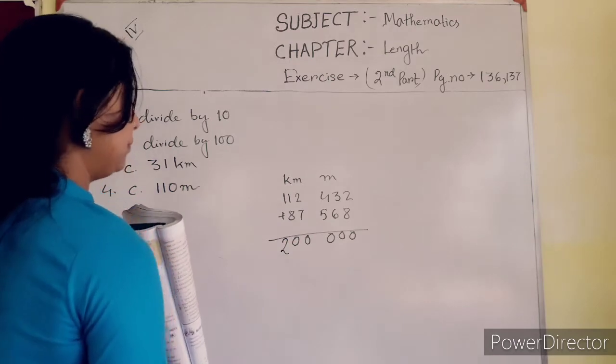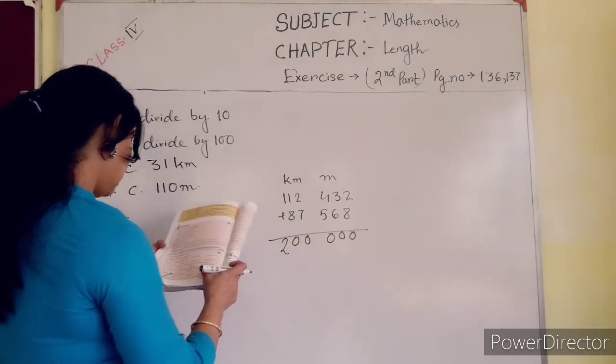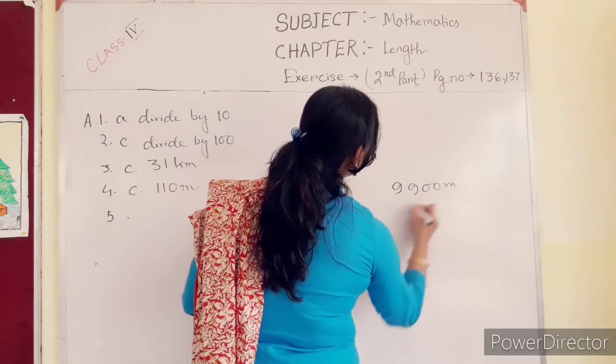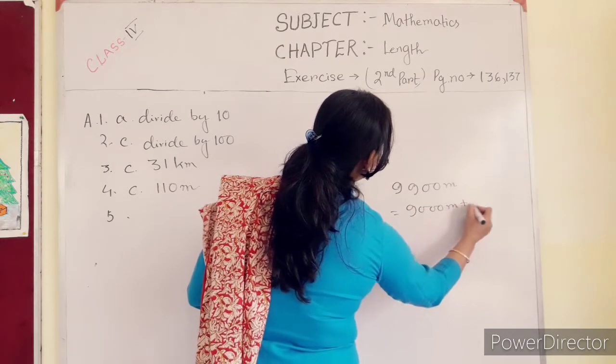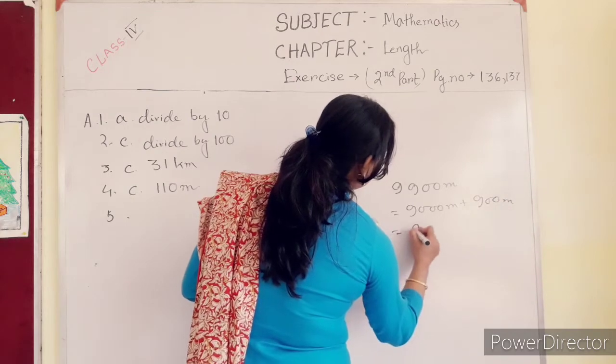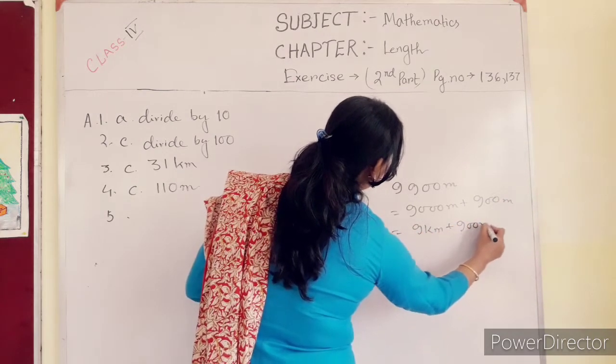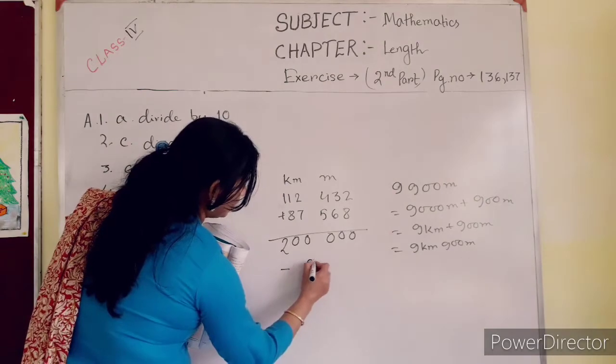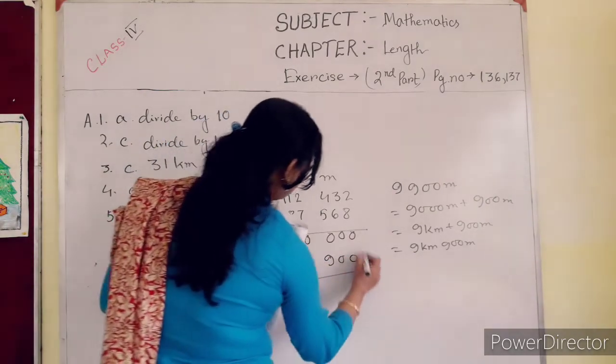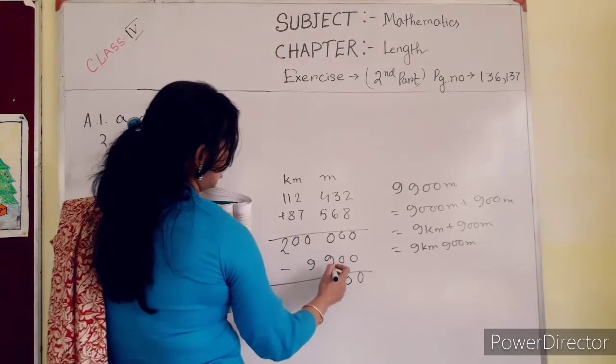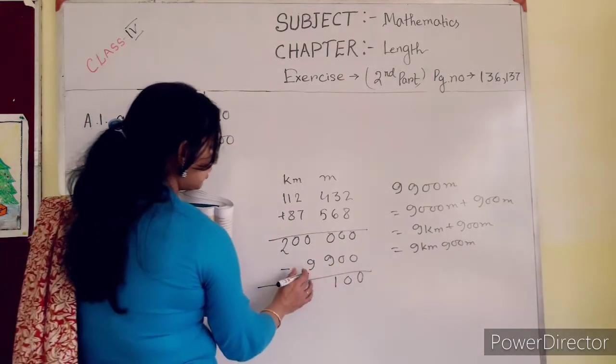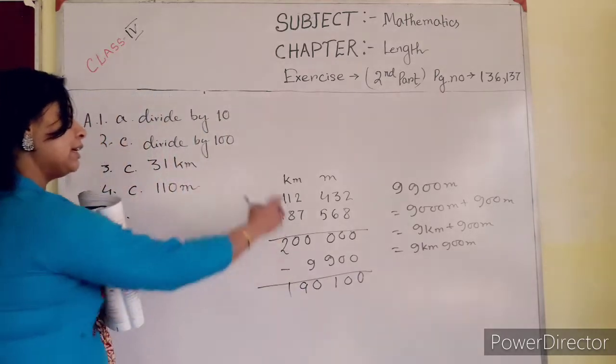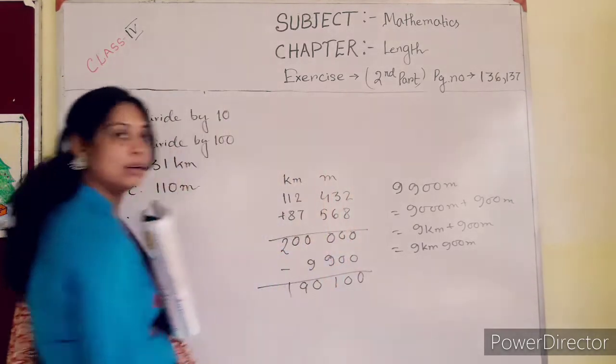1 is in your hand, 1 plus 1, 2. Answer is 200 kilometer. You have to subtract 9,900 meter. 9,900 meter equals 9 kilometer plus 900 meter. Subtract this one: 9 kilometer 900 meter. 0 minus 0, 0, 10, 10, 10, 10, 1 plus 1, 10, 0, 0, 0, 1. So 9, 190 kilometer, 190 kilometer 100 meter.